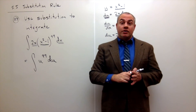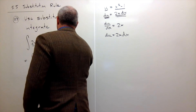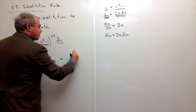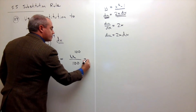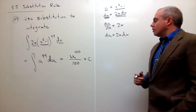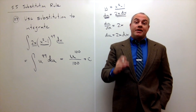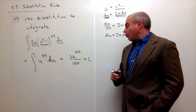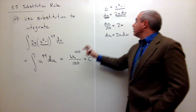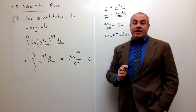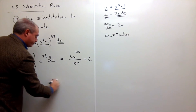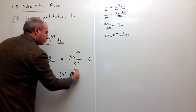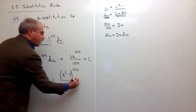That's a simple integral. The antiderivative of U to the 99th is U to the 100th divided by 100, plus our constant of integration C. But we're not done yet because we still have U in our answer. We need to back-substitute: U is x squared minus 1, so we replace U to get x squared minus 1, all to the 100th power, divided by 100 plus C. And that is our answer.